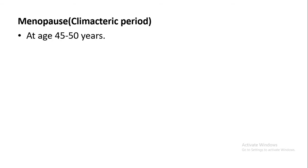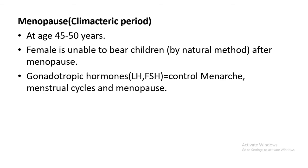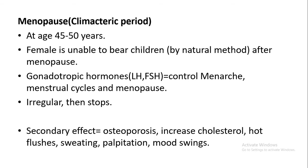Menopause is called the climacteric period, which occurs in females at about 45 to 50 years. During this period, the female is unable to produce children. The gonadotropic hormones LH and FSH are very much reduced, which is why cyclic changes are not seen during menopause.